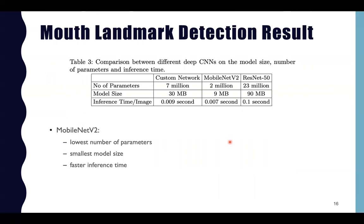In Table 3, we compare the performance in terms of inference speed, model size, and number of parameters. MobileNet V2 achieved the lowest number of parameters, smaller model size, and faster inference time, which is suitable for implementation in a mobile app. Therefore, it was chosen as the deep CNN for our proposed mouth landmark model.